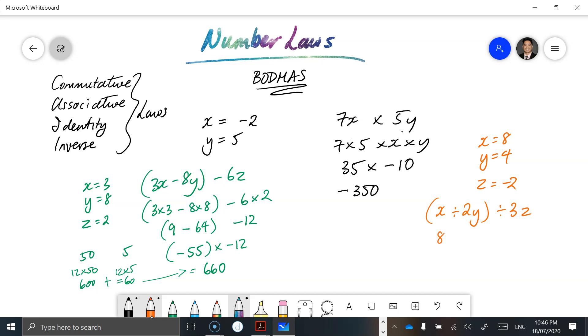So x is 8. We're going to divide that by 2y, and so y is 4. 2 times 4 is 8. And then z is minus 2. So 3 times minus 2 is minus 6. 8 divided by itself is just 1. And any division is just a horizontal version of a fraction. So we could have 1 divided by 6. And because that's a negative 6, we have a negative 1 over 6 as our answer. It becomes a negative fraction.